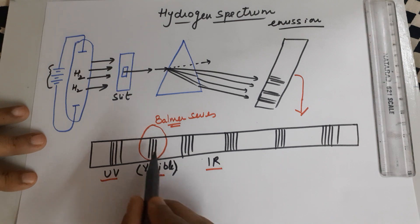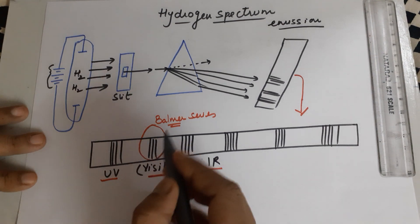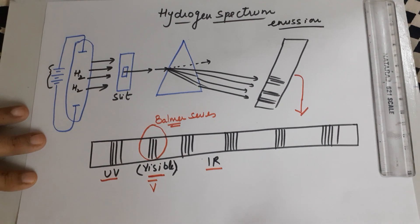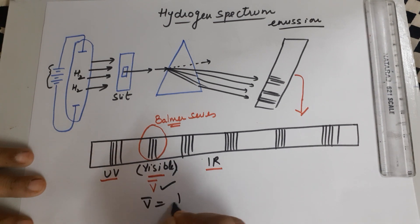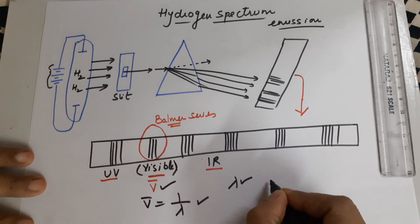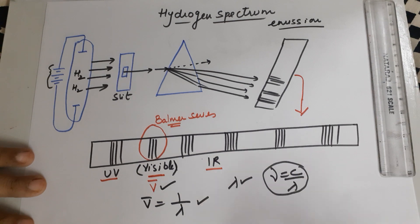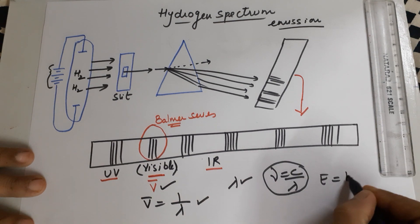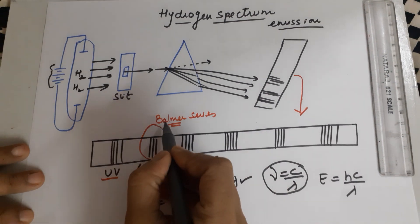Balmer called these lines the Balmer series. They were in the visible region, so they were easily identified. He also gave the wave number for these lines. If you know the wave number — which is the inverse of wavelength — you can find the wavelength, and from the wavelength you can find the frequency using c by lambda, and finally the energy of the radiation using hc by lambda.